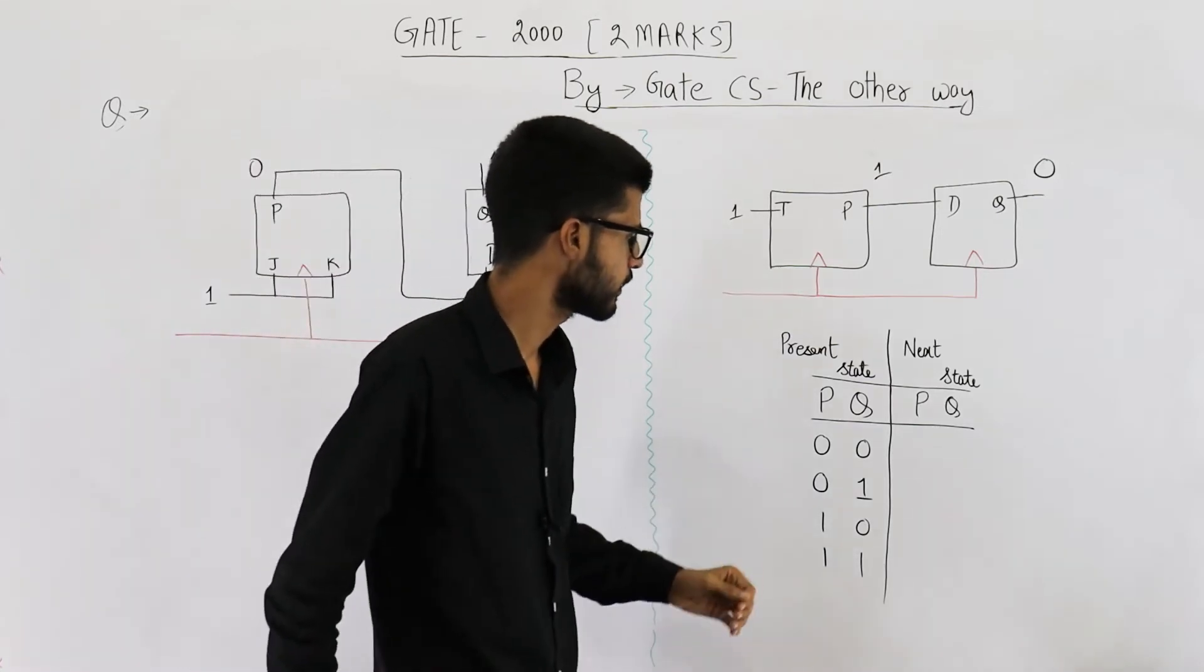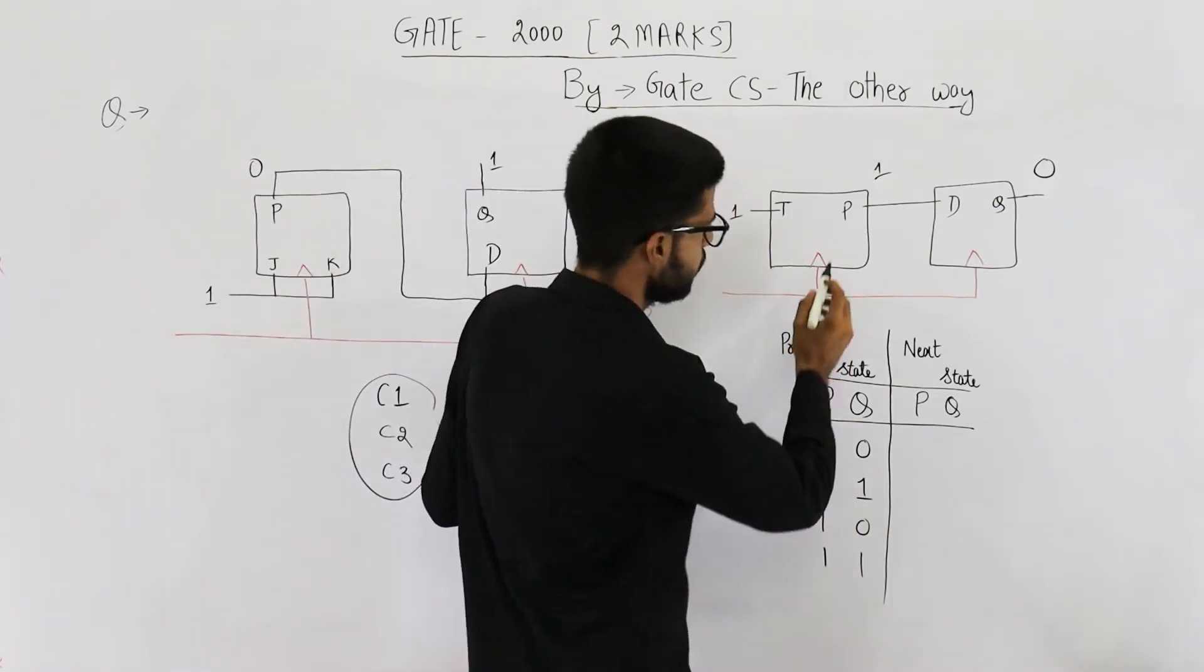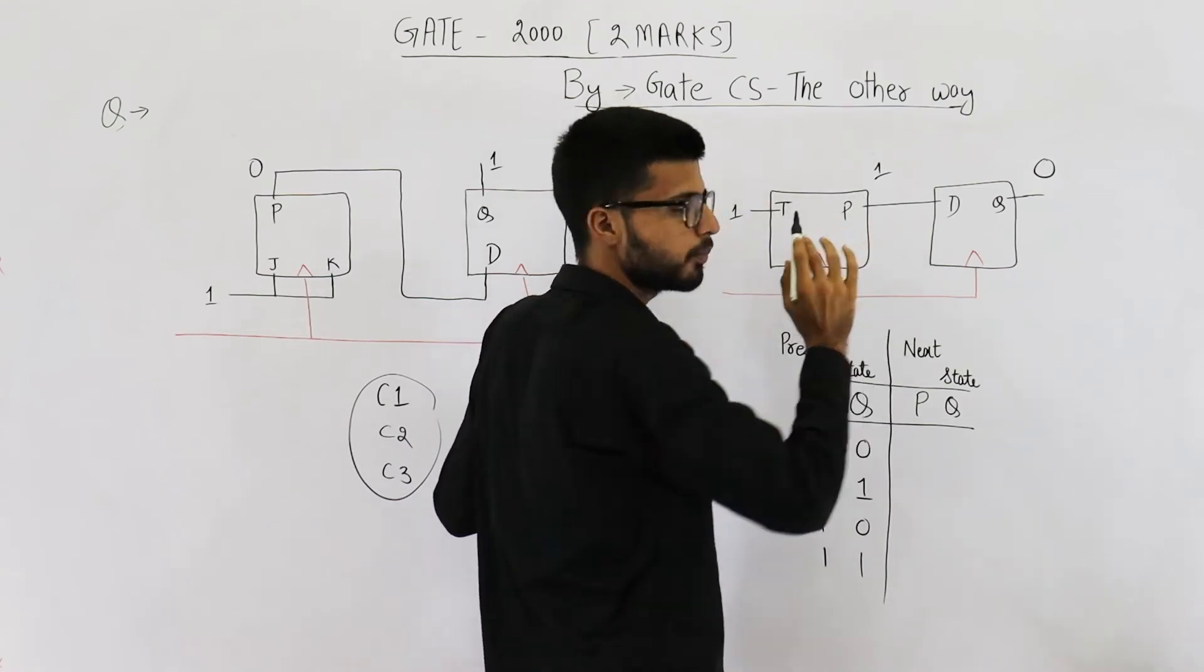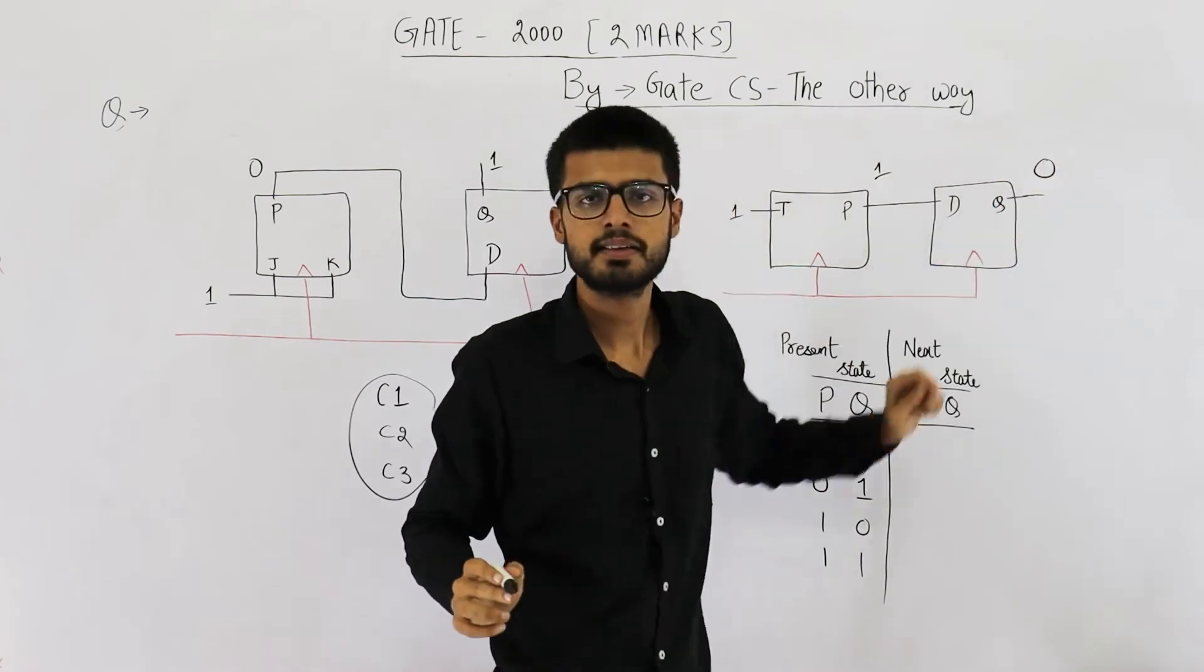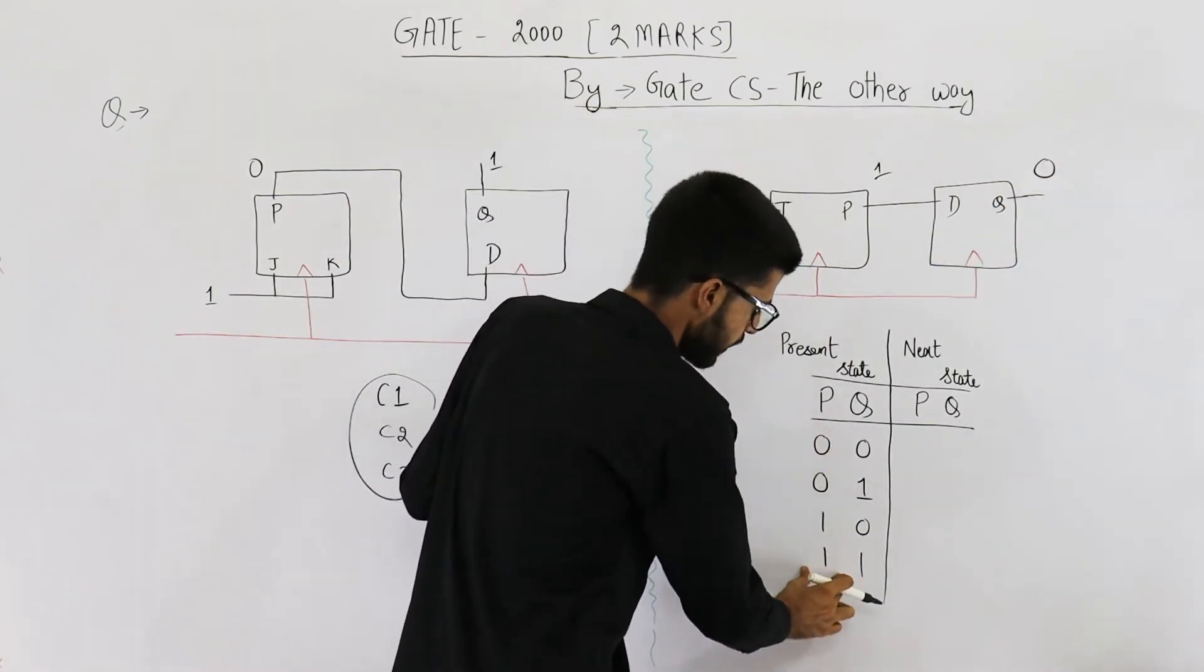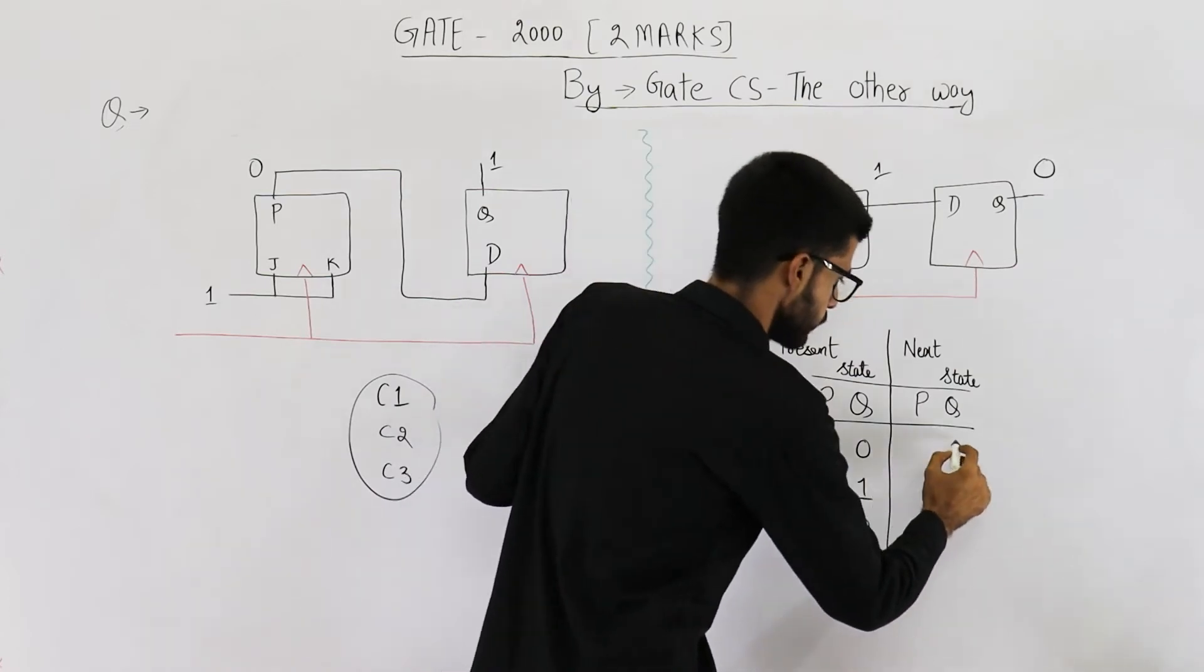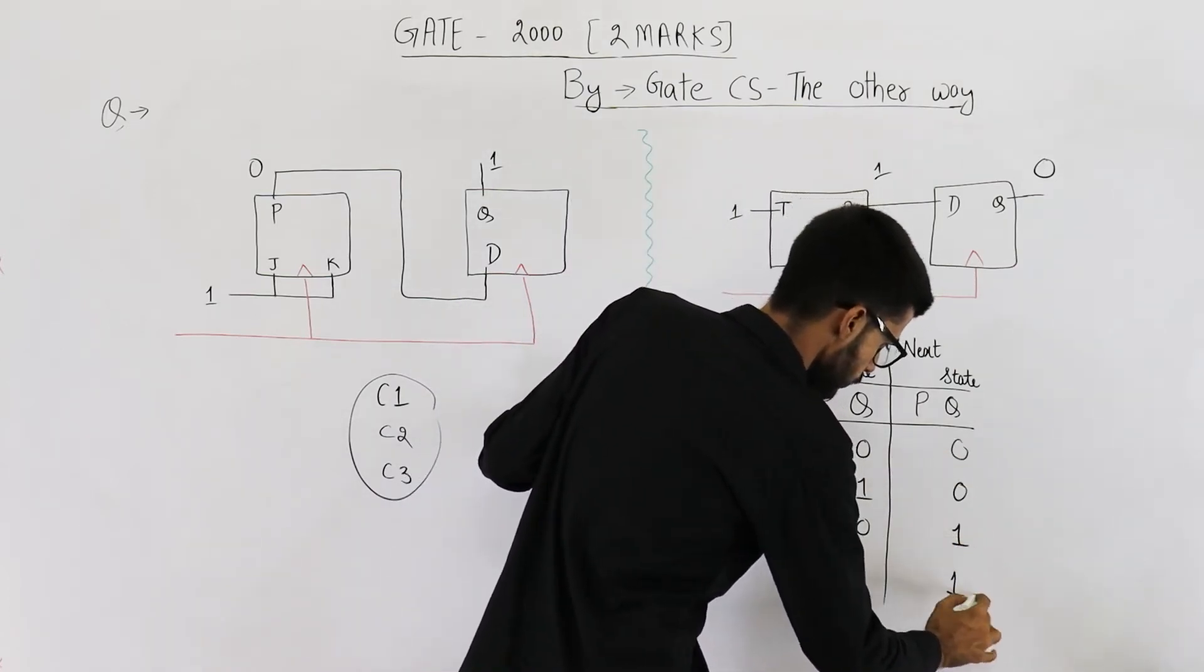Now let's also fill this table. See the value of P. If P is one upon seeing a clock signal that value will be transferred as it is in Q. So this column of P I'm copying it as it is in Q. Zero, zero, one, one.